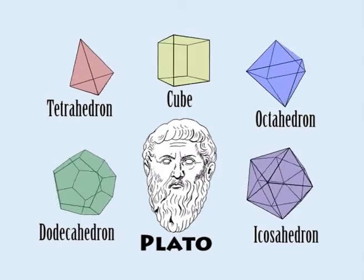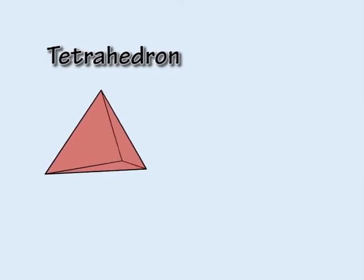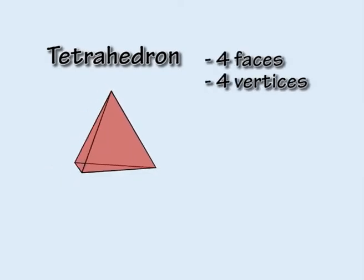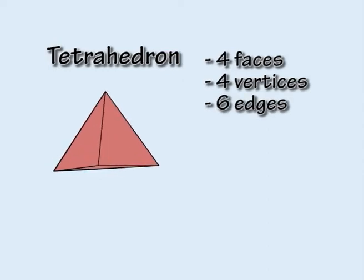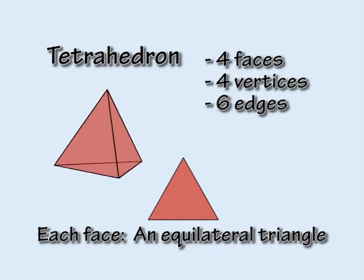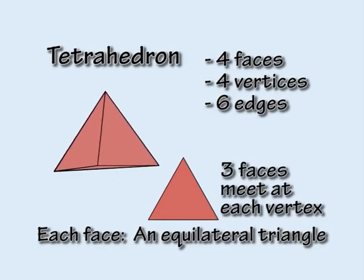Let's take a look at each of these solids in turn. The tetrahedron has four faces, four vertices, and six edges. Each face is an equilateral triangle, with three triangular faces meeting at each vertex.